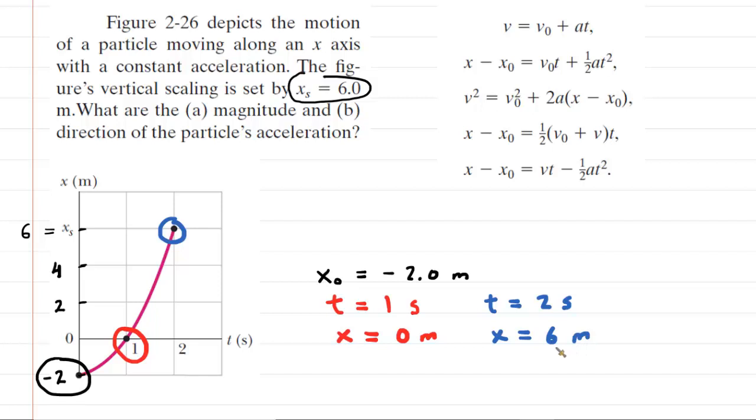Our goal is to figure out the acceleration of this particle. We're going to use one of our equations from one-dimensional kinematics. And this equation right here turns out to be very useful to us because it has the initial position and the final position, along with the time and acceleration. It also includes the initial velocity, which we may end up solving for, even though we don't need to. But that equation seems to be the most fruitful. So we're going to apply that equation two times.